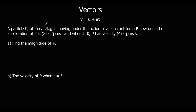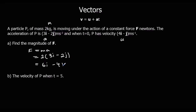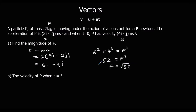So 2 kilograms mass, we've got a as 3i minus 2j, and the initial velocity is 4i minus j. So to find f, we're going to do f equals ma, which is f equals 2 times 3i minus 2j, which is 6i minus 4j. We only want the magnitude, so we'll do Pythagoras: 6 squared plus 4 squared is f squared, 36 plus 16 is 52, so f equals square root 52 newtons.